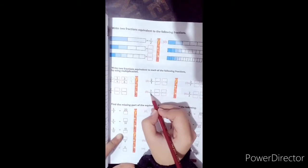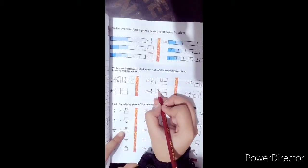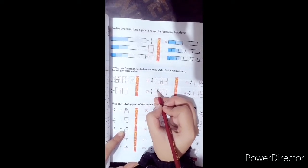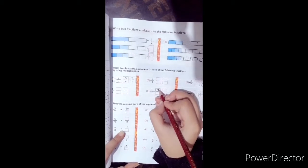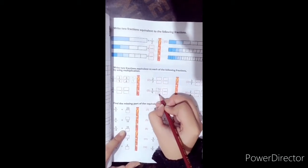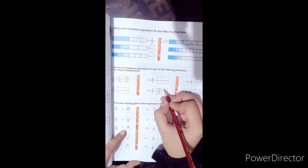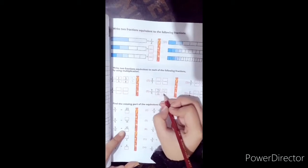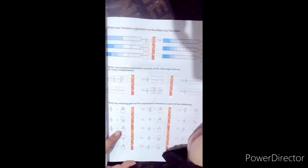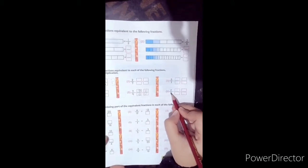This question is 7 by 9. 1 times 7 is 7, 1 times 9 is 9. 2 times 7 is 14 and 2 times 9 is 18. 3 times 7 is 21 and 3 times 9 is 27. Same as 2 by 3. 1 times 2 is 2, 1 times 3 is 3. 2 times 2 is 4, 2 times 3 is 6. 3 times 2 is 6 and 3 times 3 is 9.